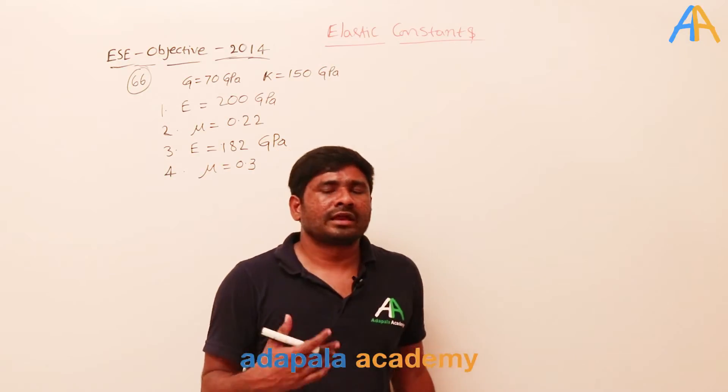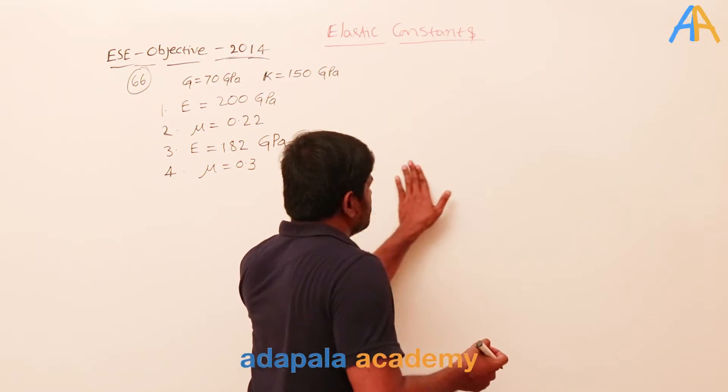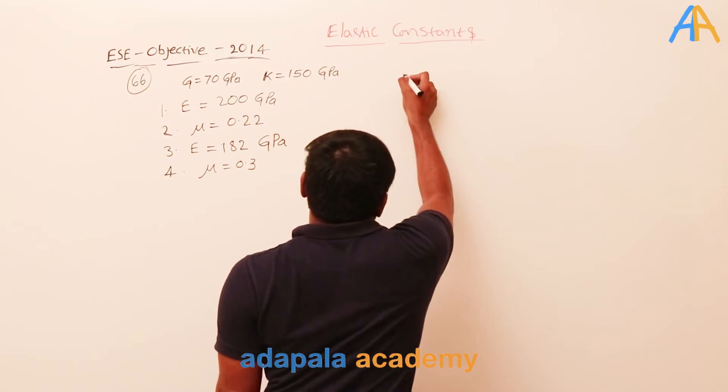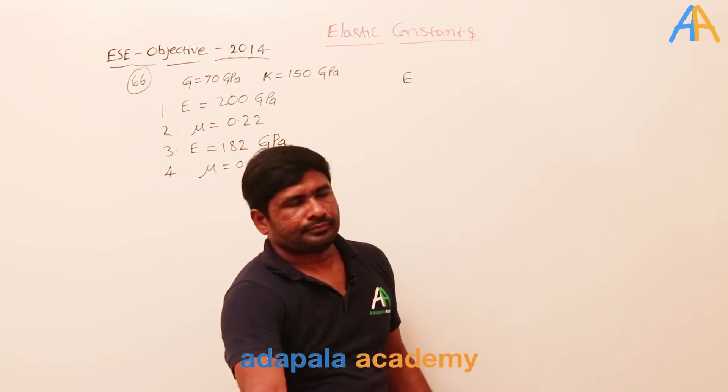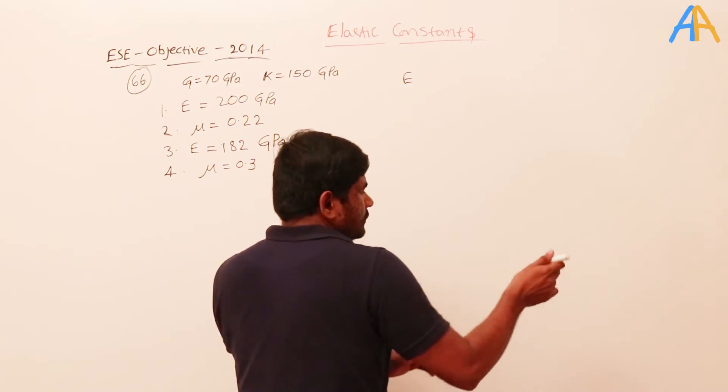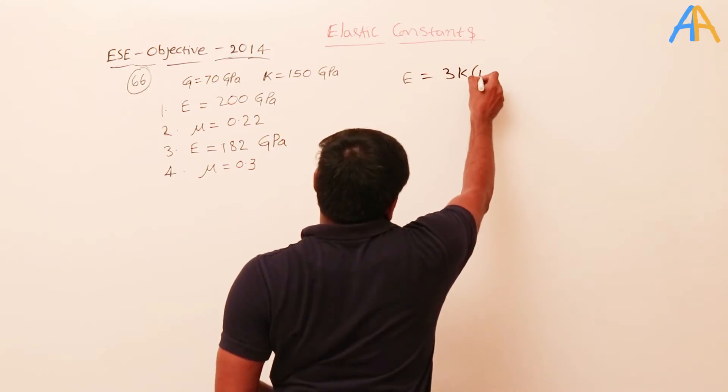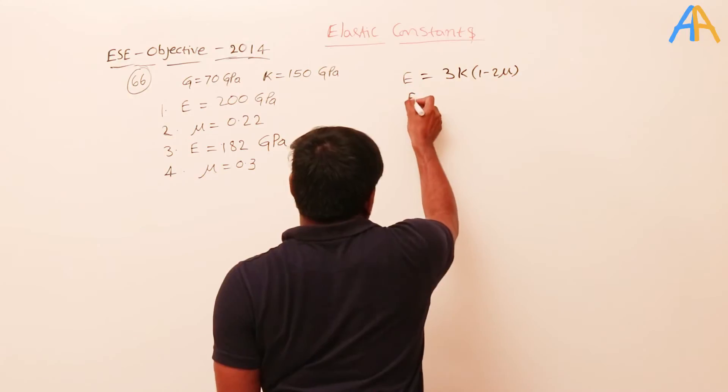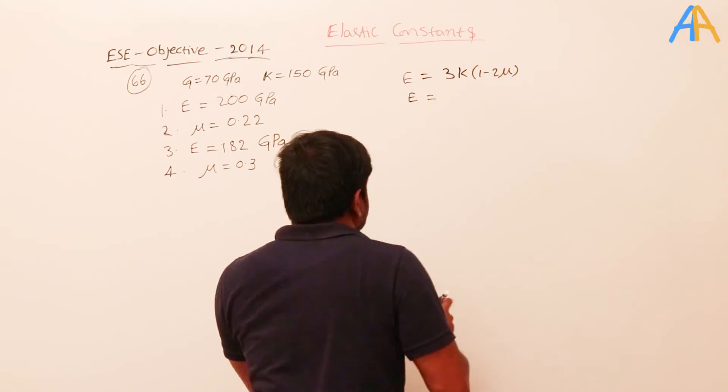This type of problem is repeating again and again, but it's testing your calculation speed. What are the formulas? E equals 3K into 1 minus 2μ, and then E equals 2G into 1 plus μ.